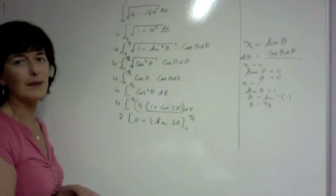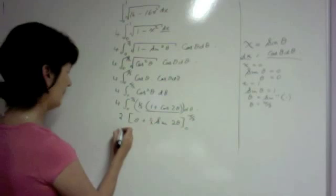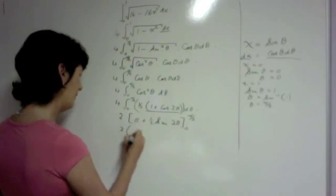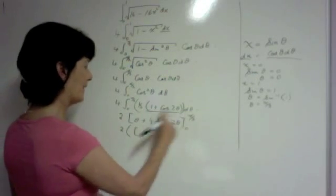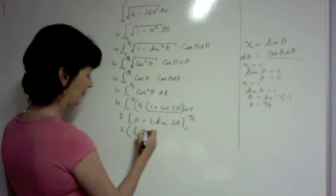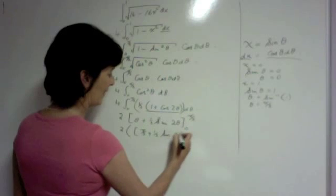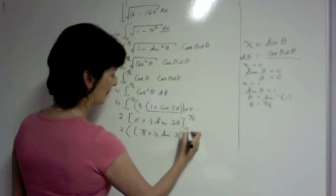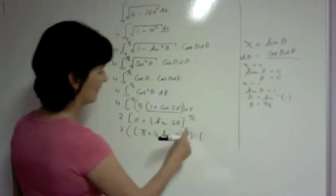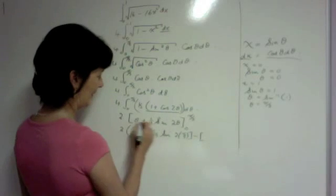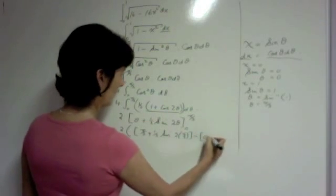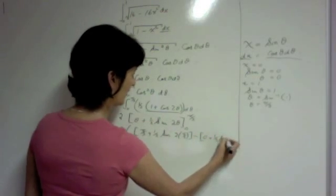And all we have to do now is sub in our limits. So you sub in the top limit. So theta is pi over 2. Plus a half sine 2 times pi over 2. And then take away, sub in the bottom limit. And theta is now 0 plus a half sine 2 times 0, which is 0.